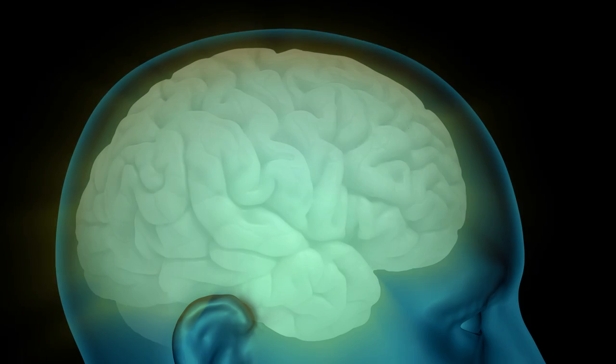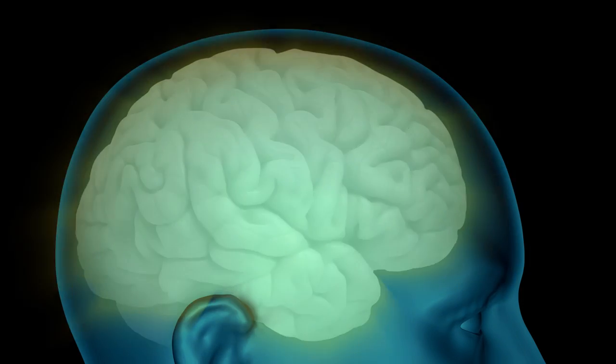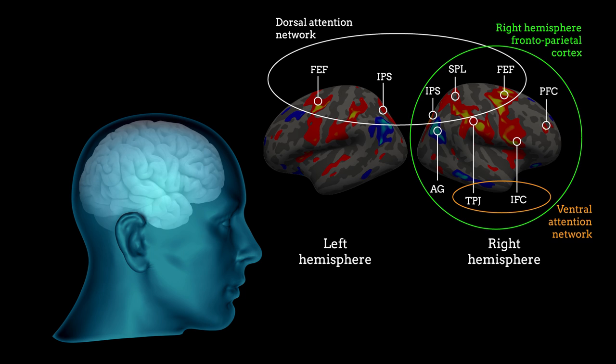Having established a way to isolate the brain activity related to the cause of perceptual switches, the researchers then evaluated the switch-related activity that occurred in three networks of higher-order brain regions thought to be involved in decision-making.